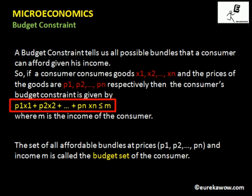Here p1·x1 means p1 is the price of good one and x1 is the quantity of good one, so p1·x1 is the total expenditure on good one. Similarly p2·x2 is the total expenditure on good two, and pn·xn is the total expenditure on good n. The left-hand side gives total expenditure; the right-hand side m is the income of the consumer. Total expenditure should be less than or equal to income. The set of all affordable bundles at prices p1, p2, ..., pn and income m is called the budget set.